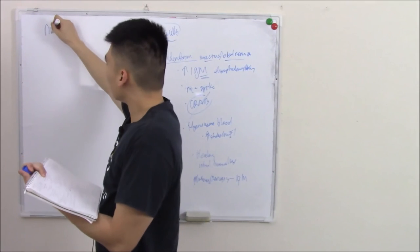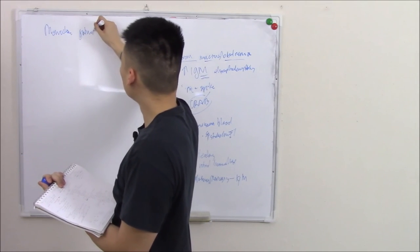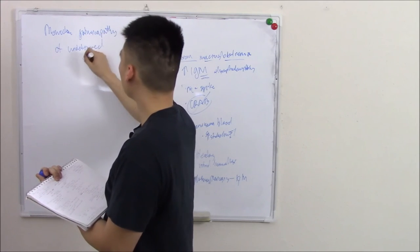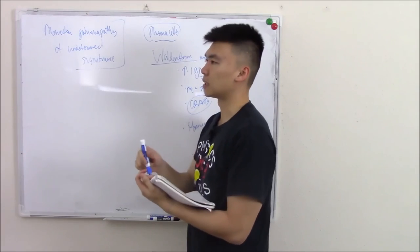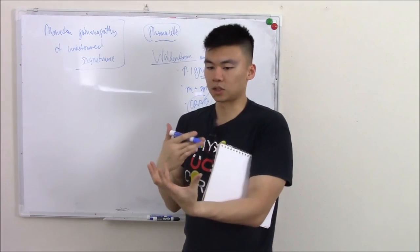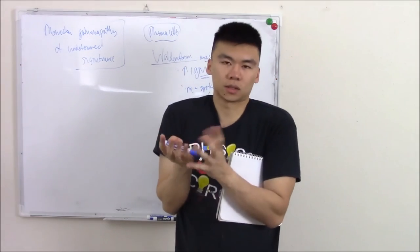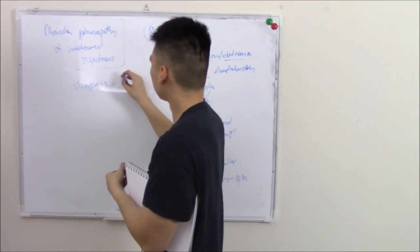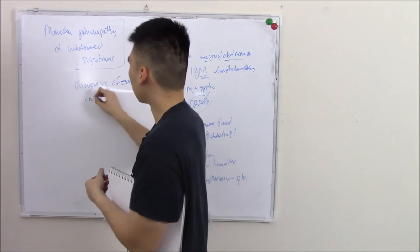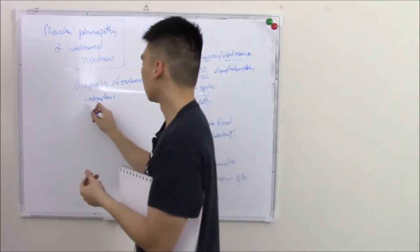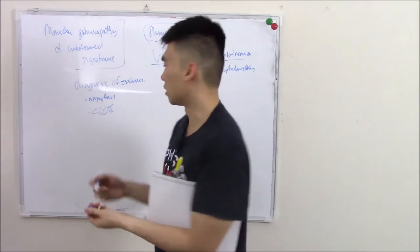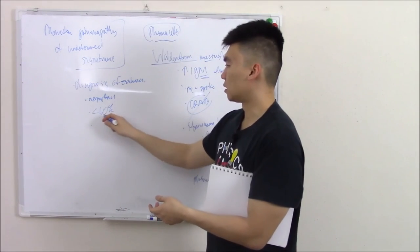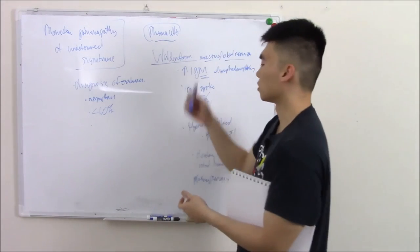Last but not least, it's monoclonal gammopathy of undetermined significance. So just by the name, it's basically you have this proliferation of plasma cells, but because you're not showing symptoms, because you're not showing the classical signs of the two we just talked about, we just say it's undetermined significance. So it's a diagnosis of exclusion. Once you ruled out Waldenstrom and multiple myeloma, it's asymptomatic. You just happen to find proliferation of their plasma cells. However, it's under 10%, so it doesn't fall into the definition of multiple myeloma. And what do you do because it's asymptomatic? Do you just forget about it? No, you closely monitor it because this number can grow and it can become multiple myeloma or Waldenstrom. So you're going to want to closely monitor.